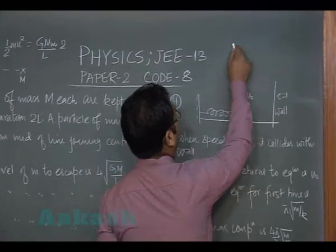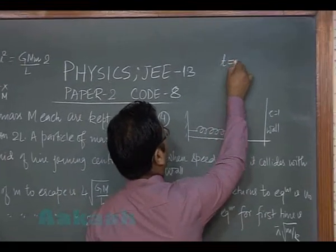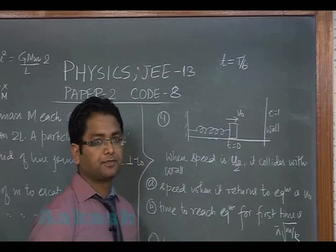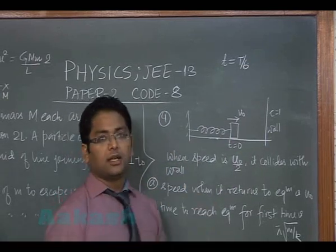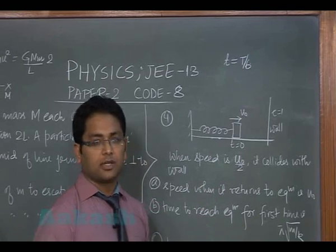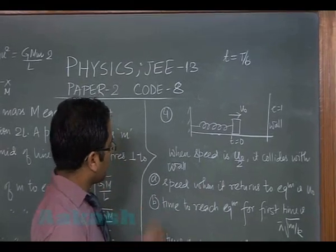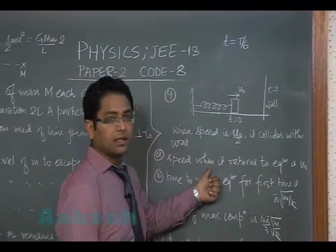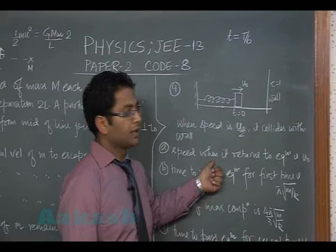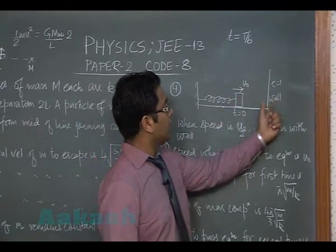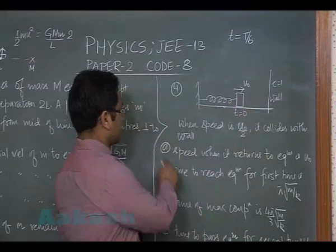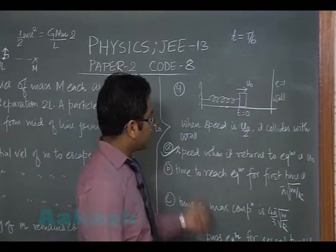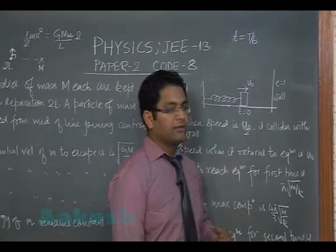The question says when the speed of the block is u naught by 2, it collides with the wall. That means the amplitude is somewhere here. So let's try to find at what time will the block hit the wall. Using the data, you could easily see that the block will hit the wall at t/6. You could use v equals v naught cos omega t and you could get the data.